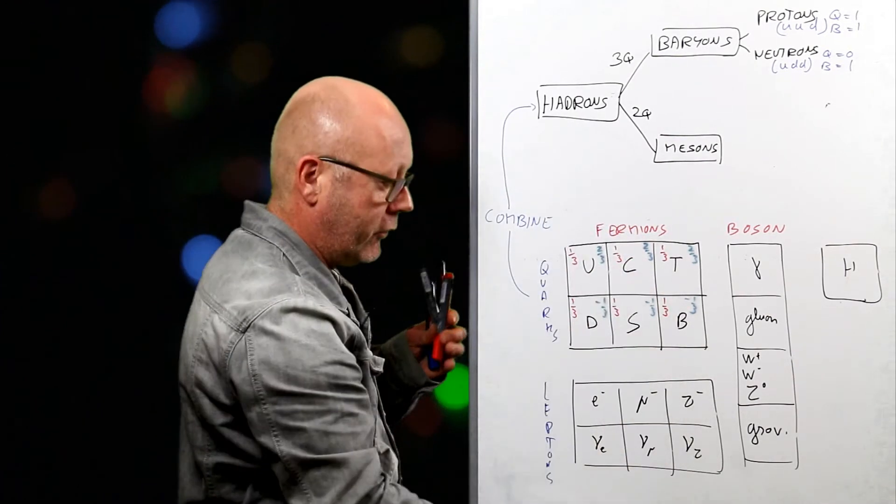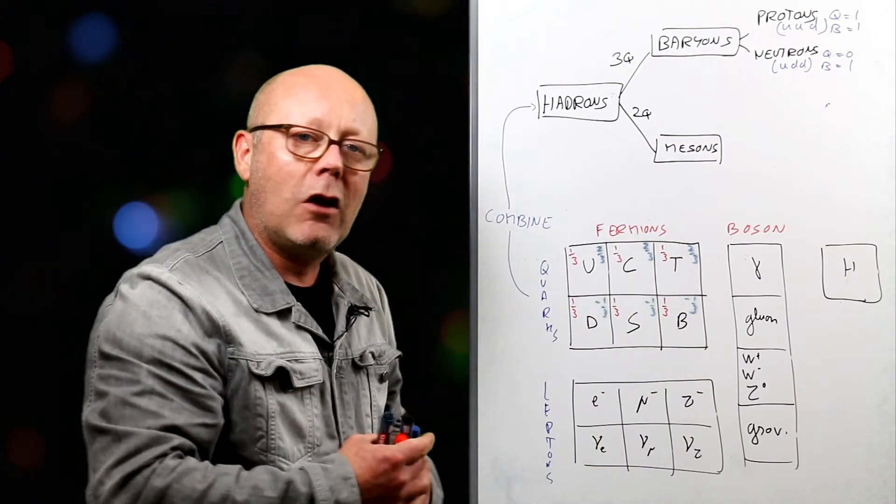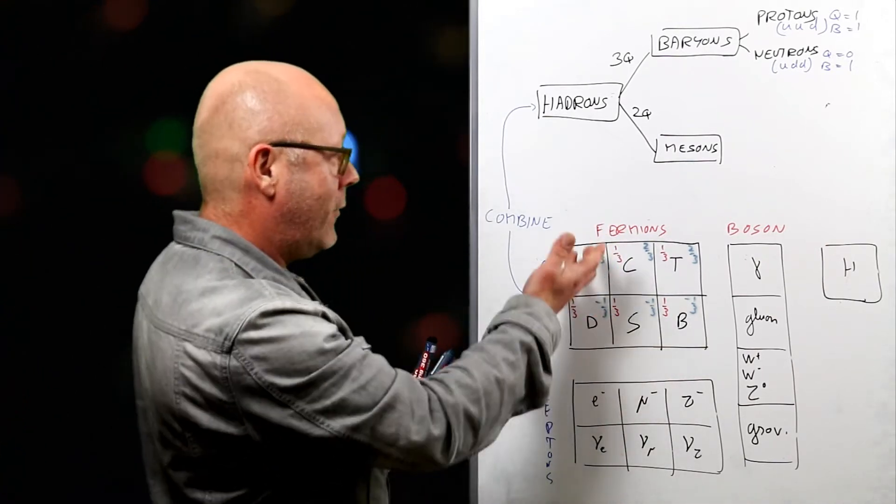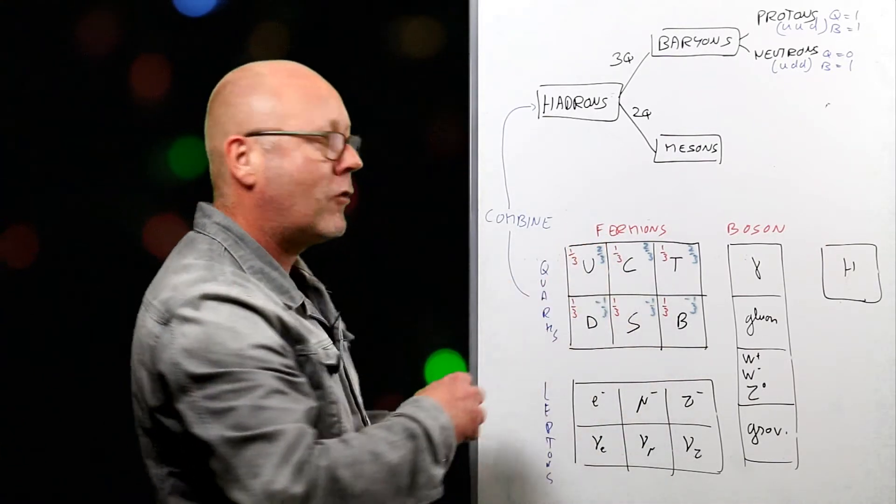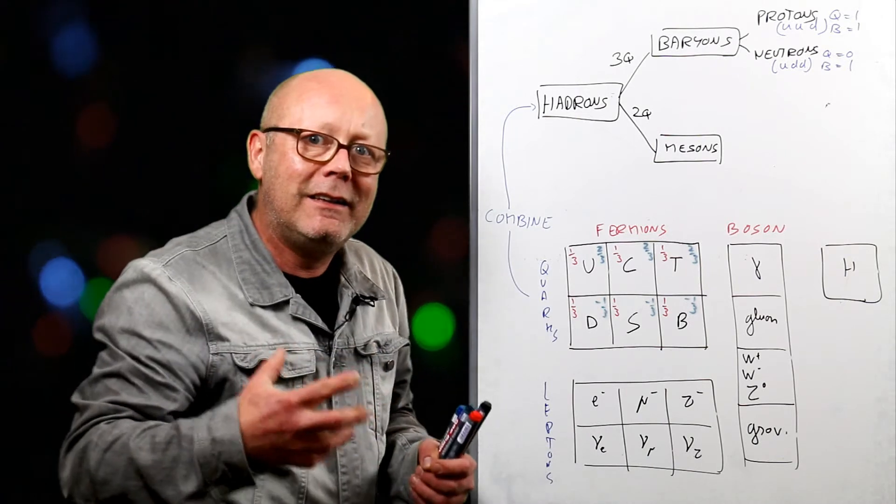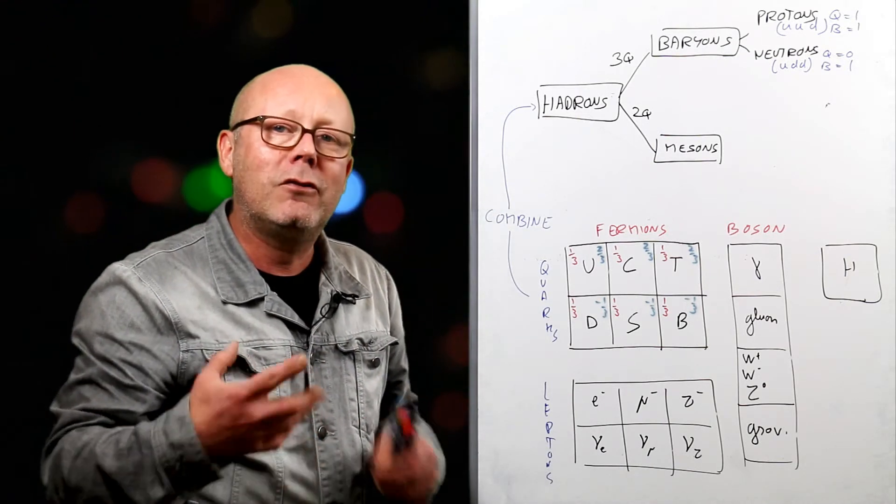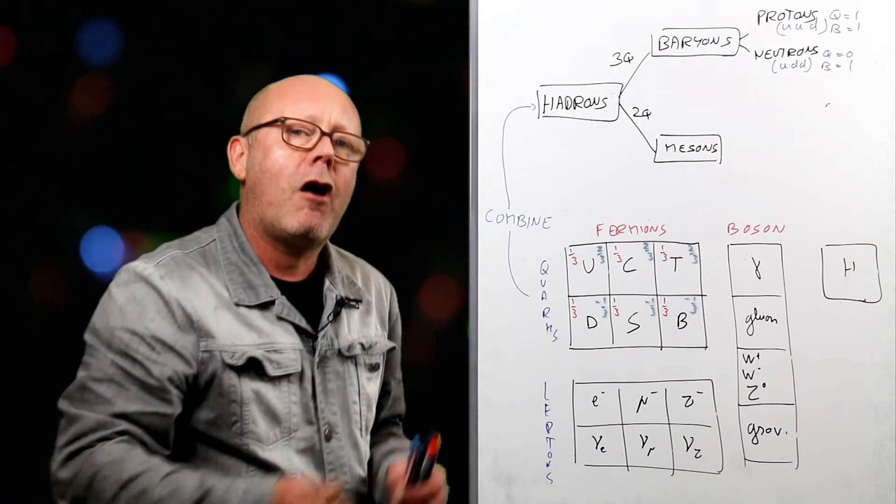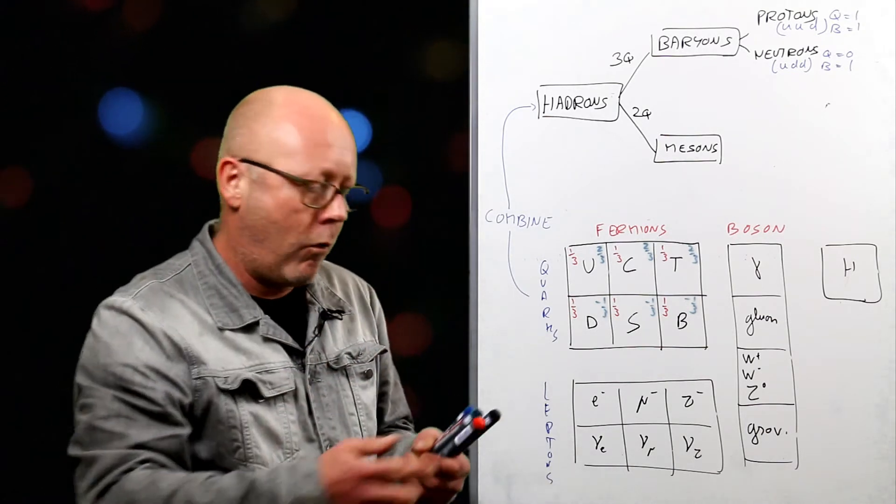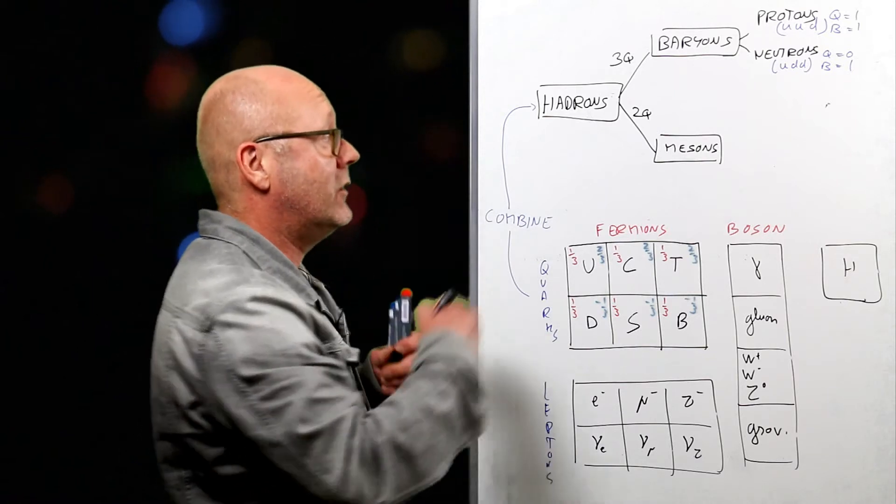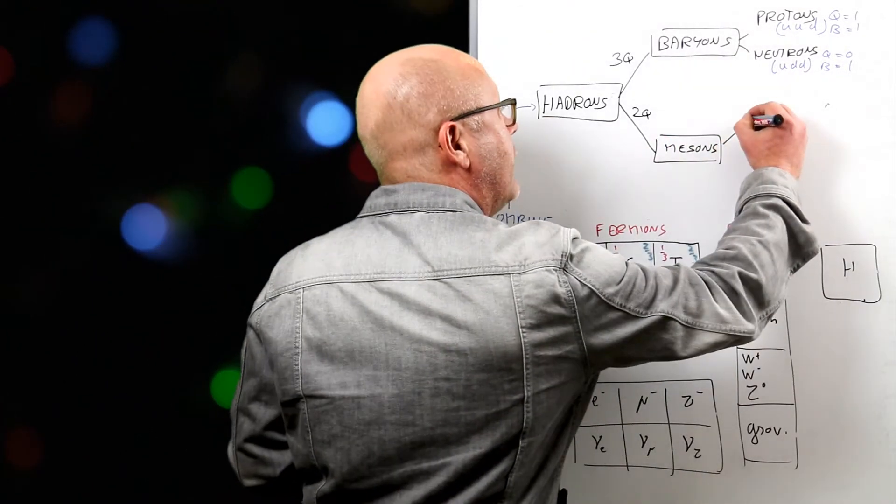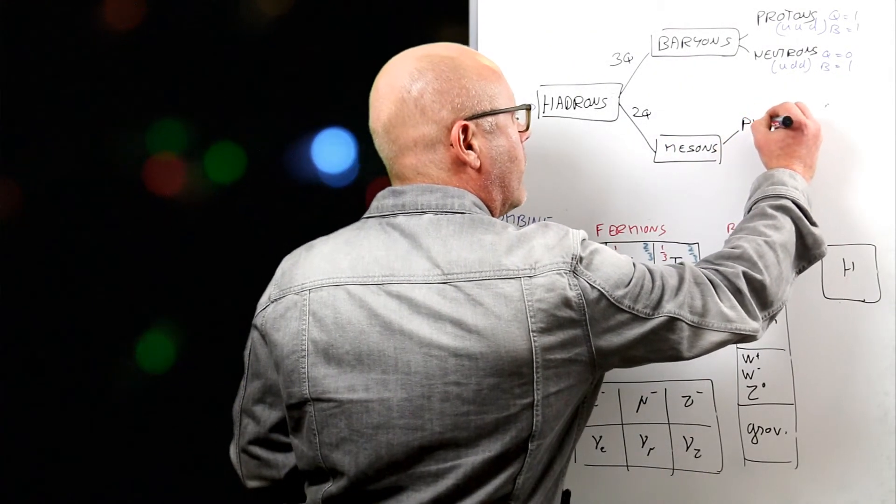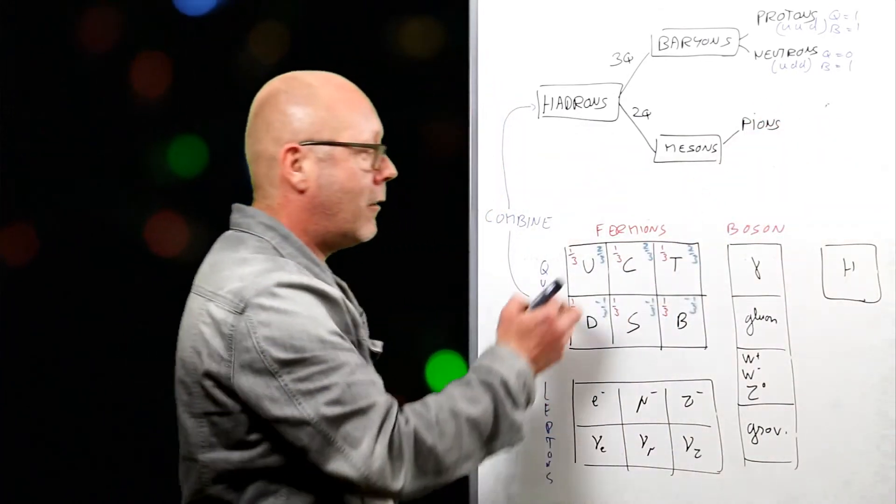Now, mesons are not baryons. If I combine two matter quarks, I get a baryon number of two thirds, but these are not baryons. Mesons have got a baryon number of zero, so they have to be made of a quark and an anti-quark. For instance, there's one category which I call pions, which is made of ups and downs.